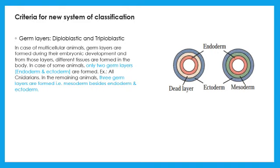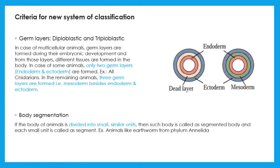The next criteria is body segmentation. The body of these animals is divided into small similar units called segments. For example, earthworm from phylum Annelida.